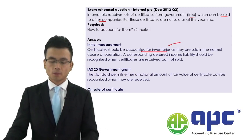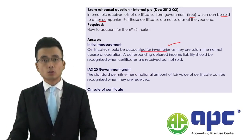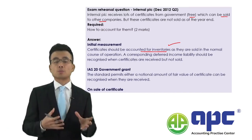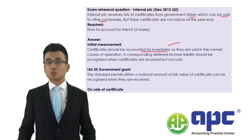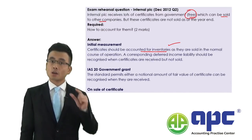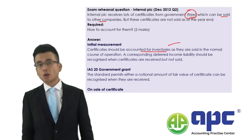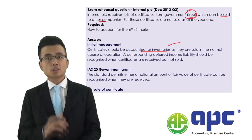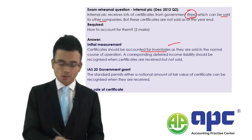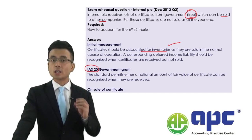However, for initial measurement of inventories we use the historical cost method — the initial purchase price plus incidental costs incurred. But in this case, we obtained those certificates free of charge; we haven't incurred a single penny. So how can we account for it? Because those certificates are given by the government, we account for them under IAS No. 20 Government Grants.